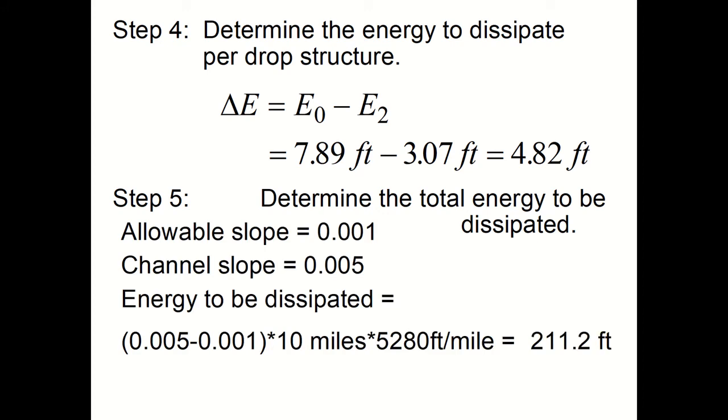To determine the total energy that's dissipated, Step 5, look at the allowable slope. The channel slope if there were no drop structures. So the energy dissipated is 0.005 minus 0.001 times 10 miles times 5,280 feet per mile.